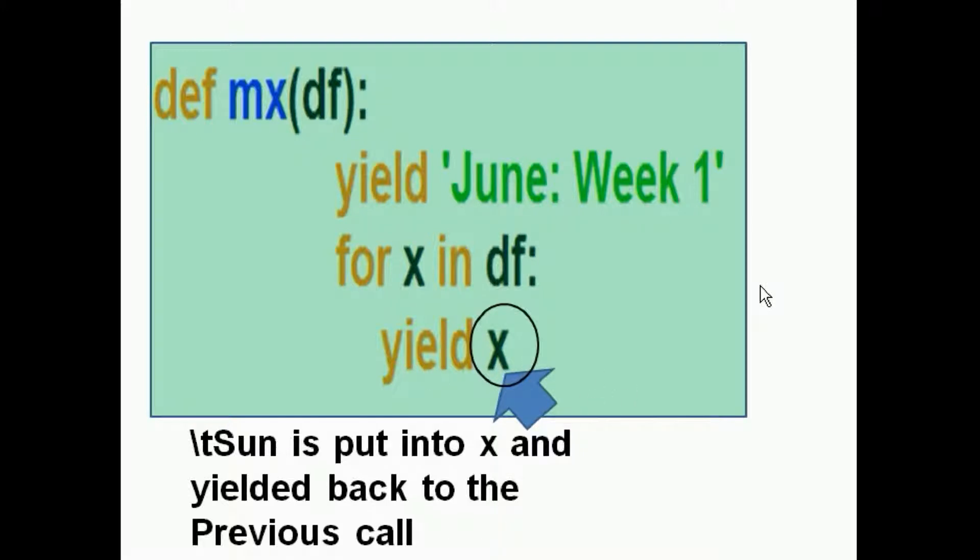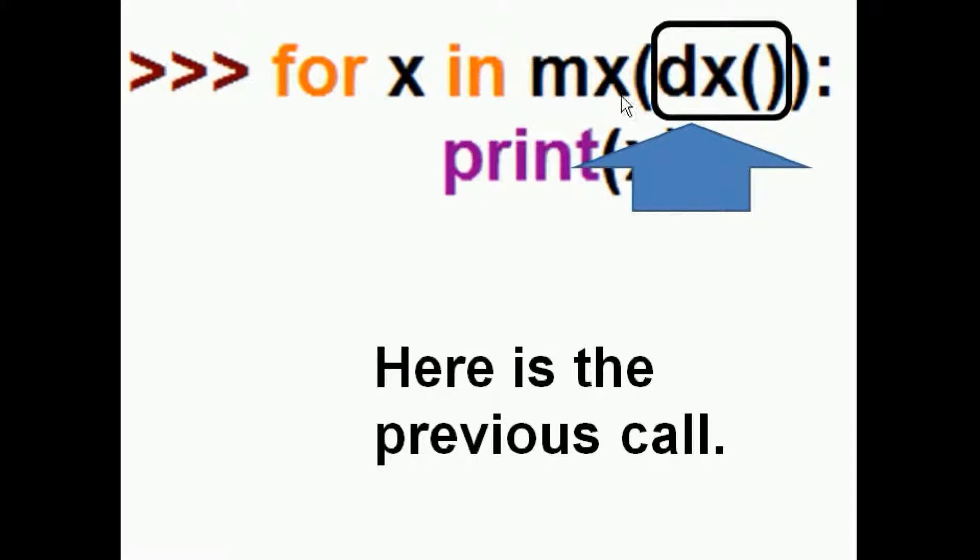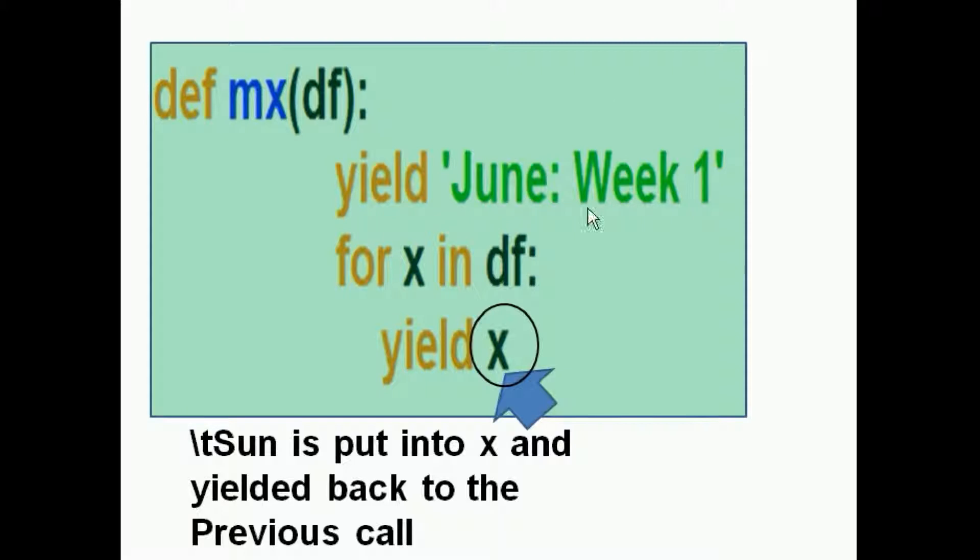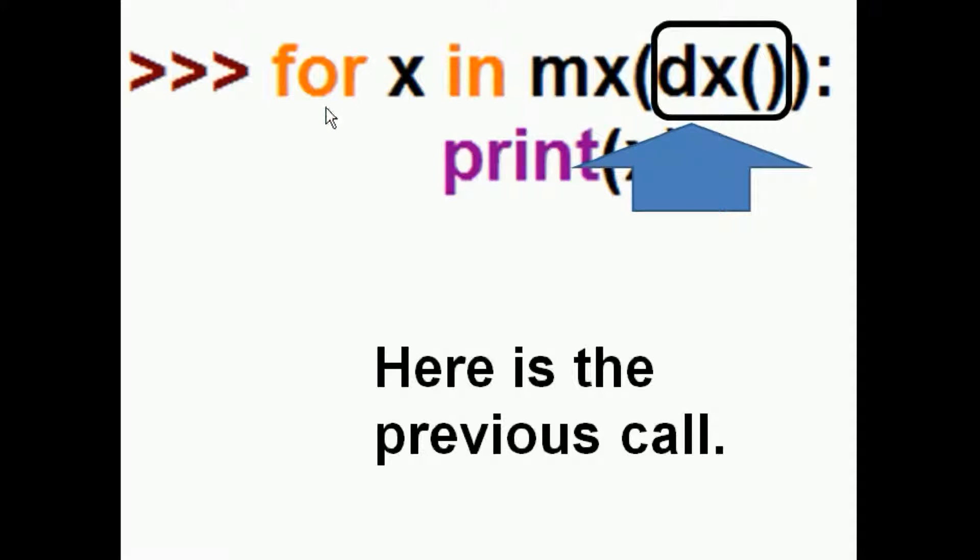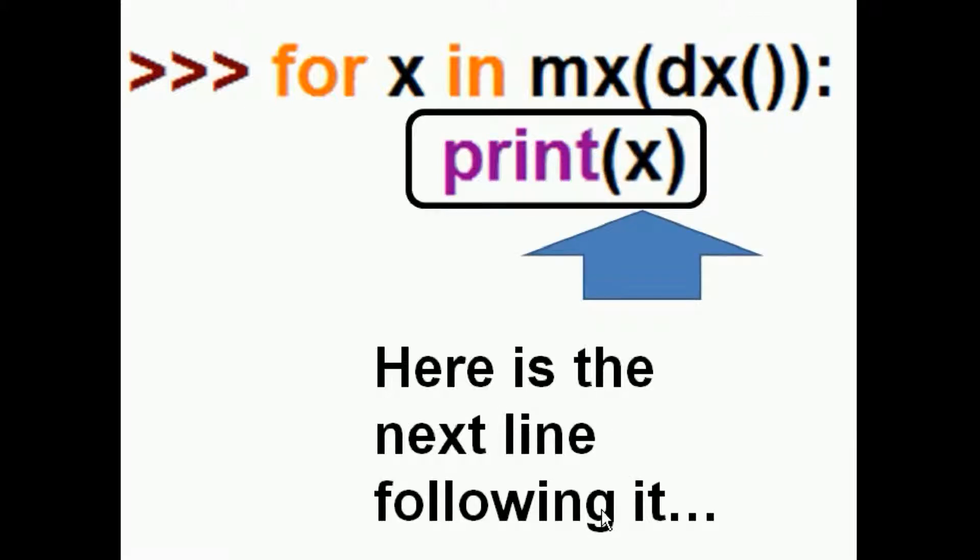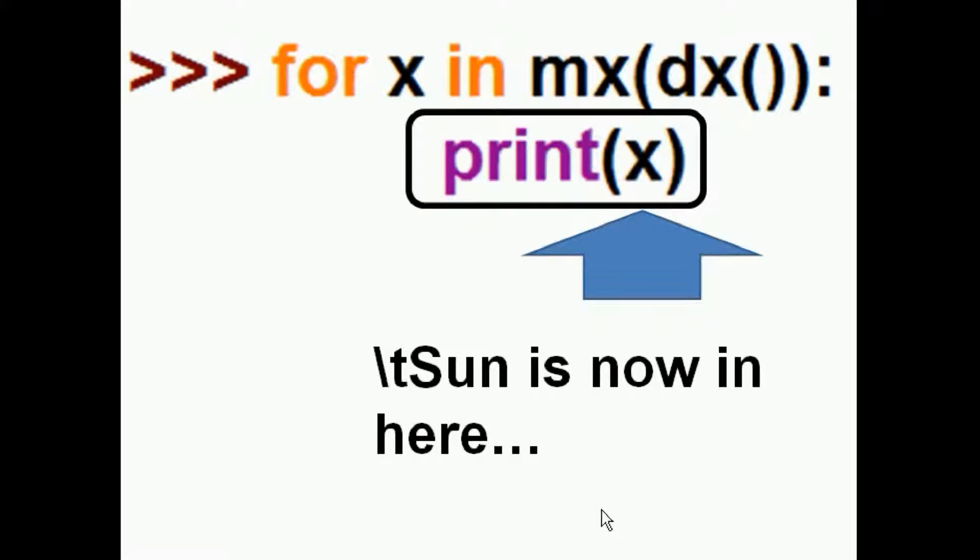Now we got another yield statement. And the yield statement means go back to the previous function that called that function. Well, wait a minute. Who called MX? Well, this guy called him. So he comes back over to here. And this is where the call was made to MX passing a DX. Here's the previous call. Okay, and the X is put into here, and here's the next line following it. Slash T sun is now in here and gets printed out. And it looks like this now. June week one, Sunday.